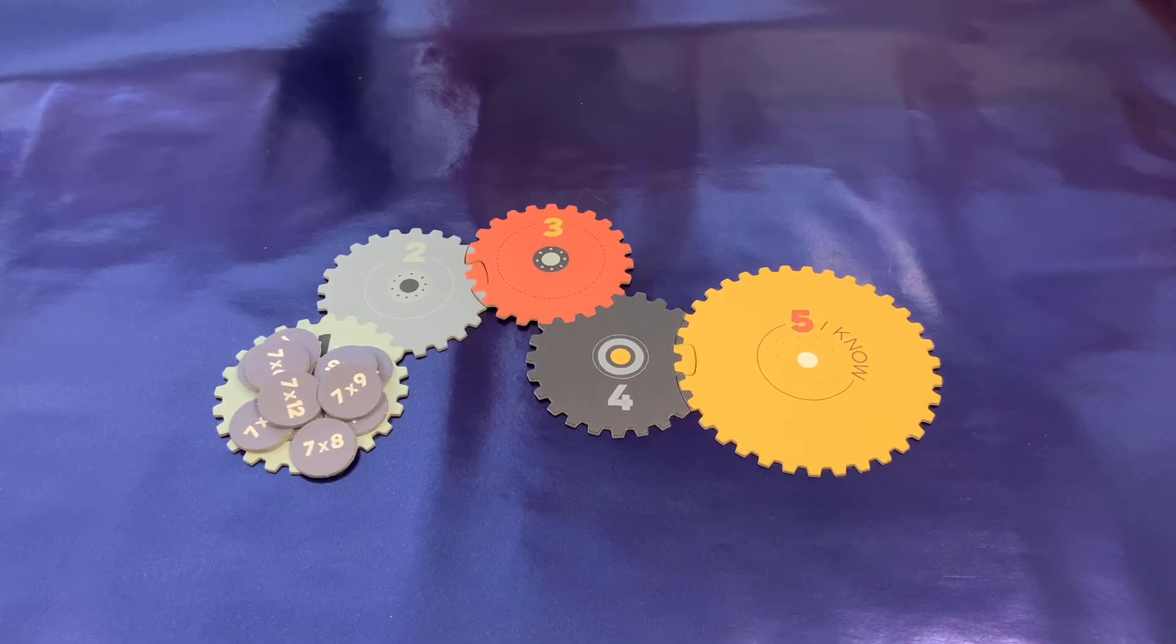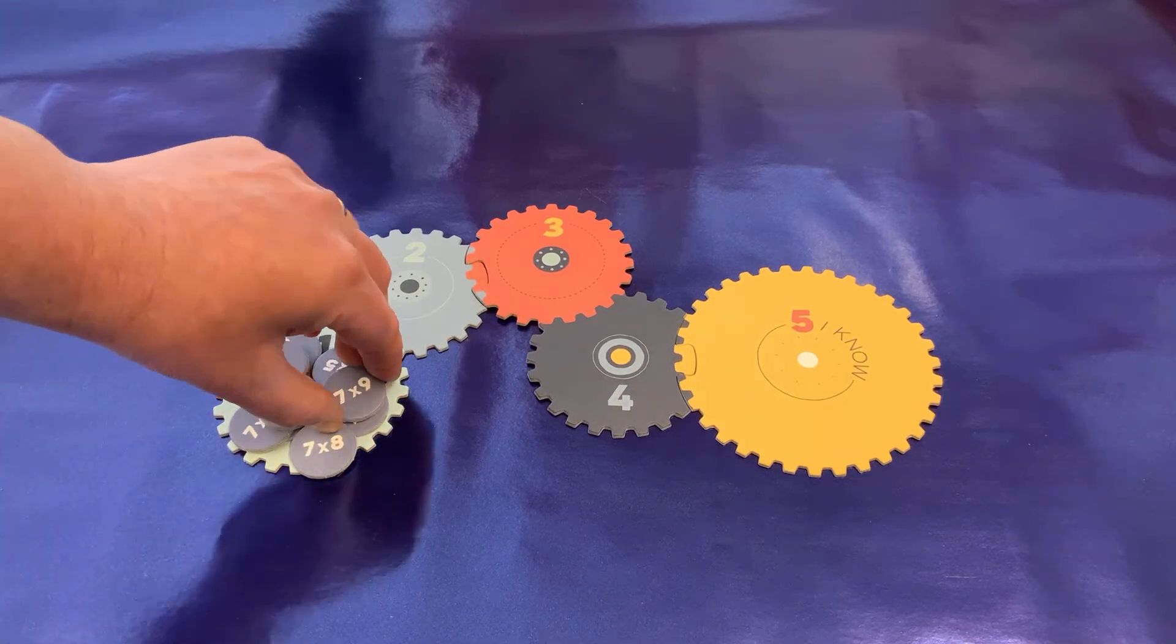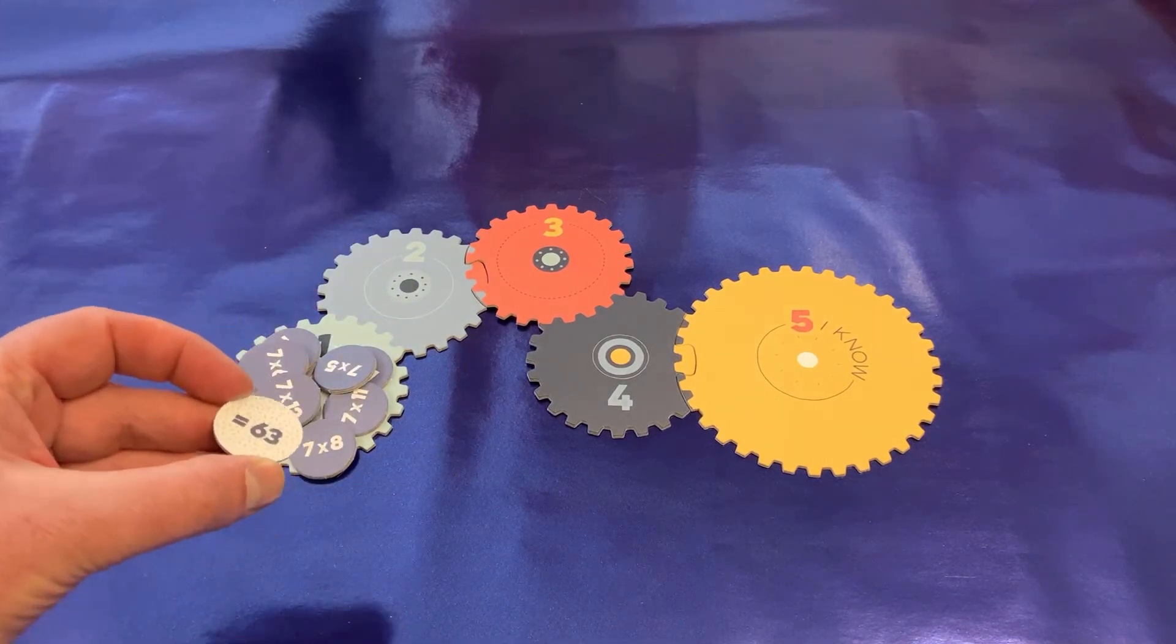You start with the pieces on cog one. Test yourself, and if you get the answer correct, you can move that to cog two.